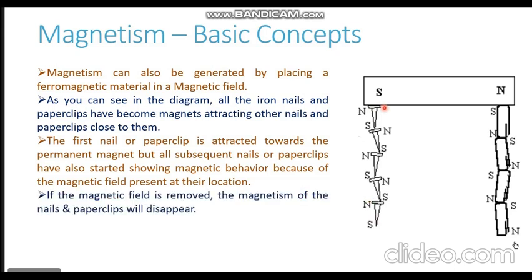If the magnetic field is removed, the magnetism of the nails and paper clips is going to disappear and all of them are going to fall down. This kind of magnetism is known as induced magnetism, and it is generated by the presence of a magnetic field — if we place a ferromagnetic material in a magnetic field, it starts behaving like a magnet.